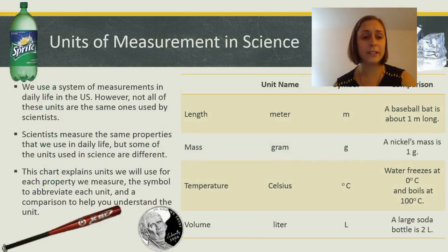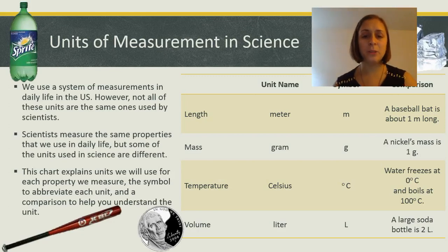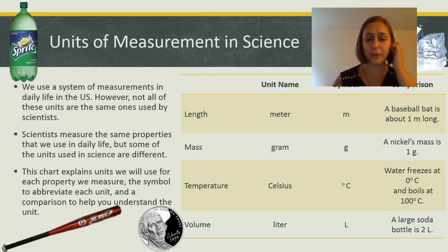We use the system of measurements in daily life in the US. We might measure length in inches or miles. Mass we'll usually measure weight instead, which is a related idea. Weight is how heavy something is due to gravity and its mass. Mass is just the amount of matter in something. So, in daily life, we'll usually talk about the weight of something in ounces or pounds, but in science, we're going to speak about mass.